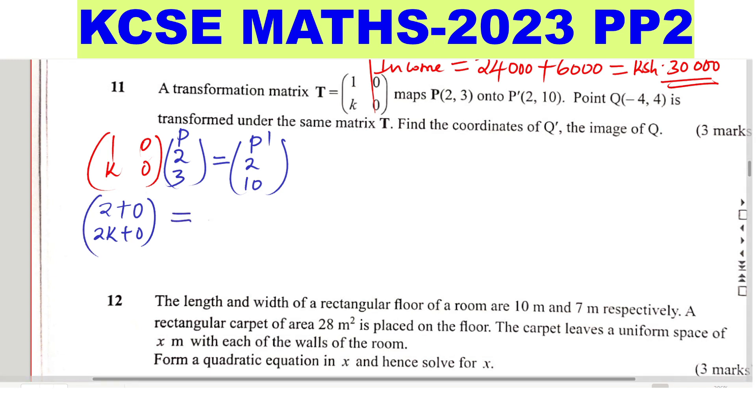And this one will give 2, then row 2, so you get, 2K plus 0 is equals to 10. You get 2K is equals to 10, and K is equals to 5.